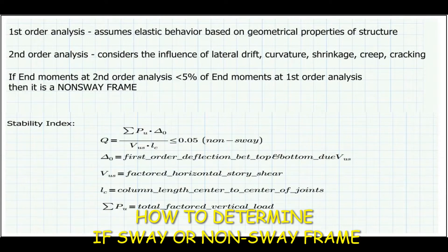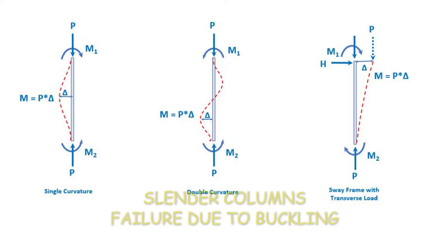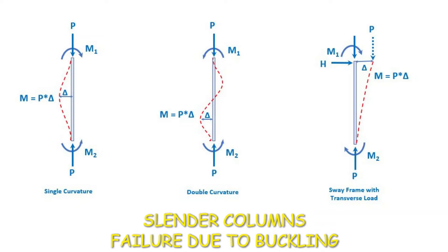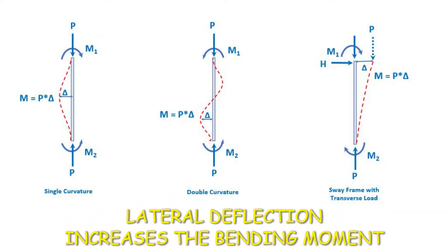After we determine that the column is slender and know the type of frame, we can proceed with the analysis. We know the column has end moments due to load eccentricity, M1 and M2. Because it's a slender column it's also susceptible to buckling, so we need to consider lateral deflection. This lateral deflection, or delta, will also produce a moment — the P-delta moment. The initial deflection produces a bending moment, which causes further deflection, which produces more moment, and so on. This is known as the P-delta effect.